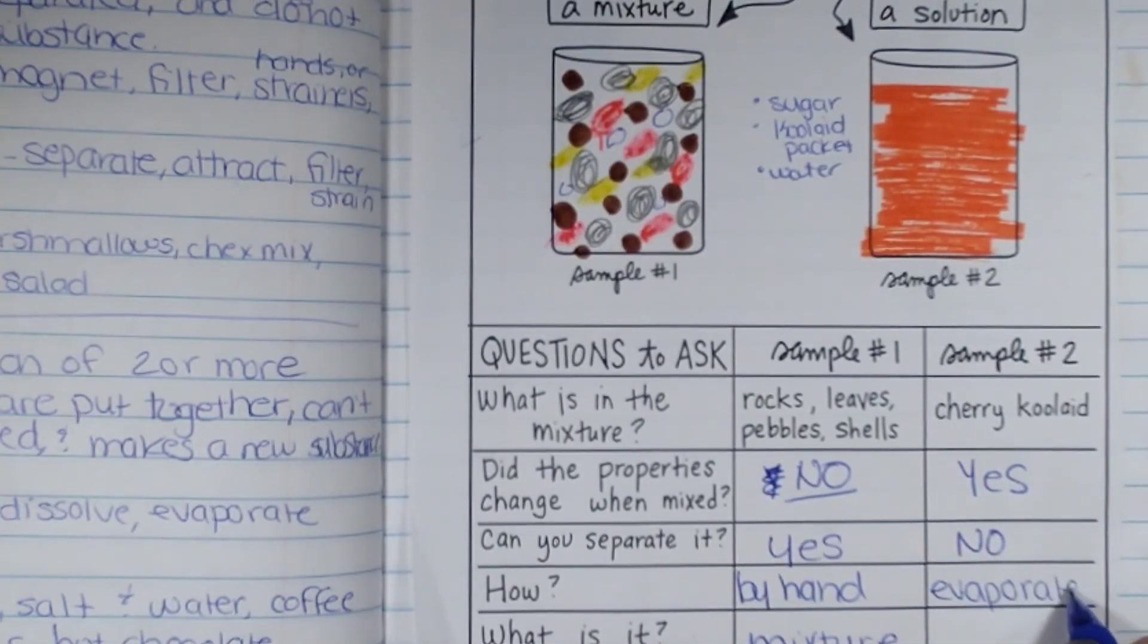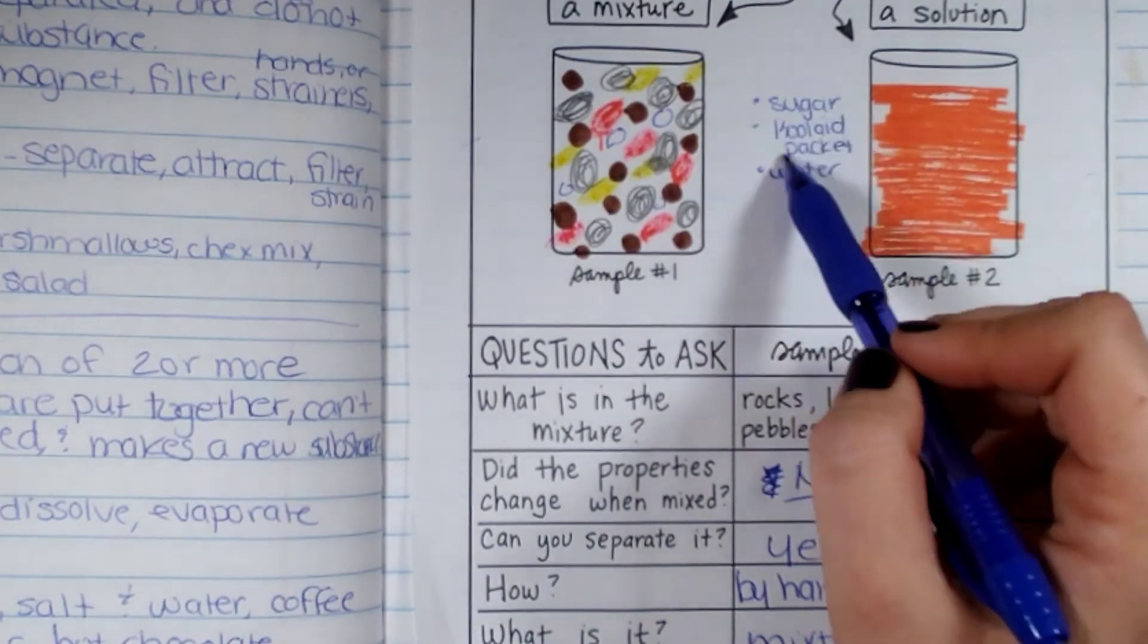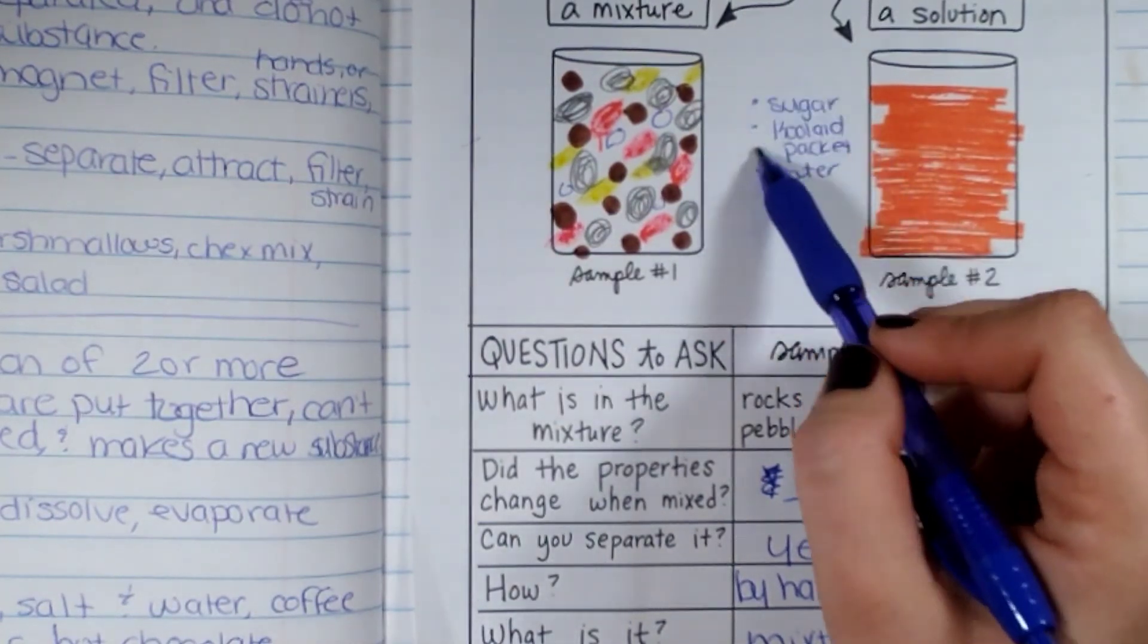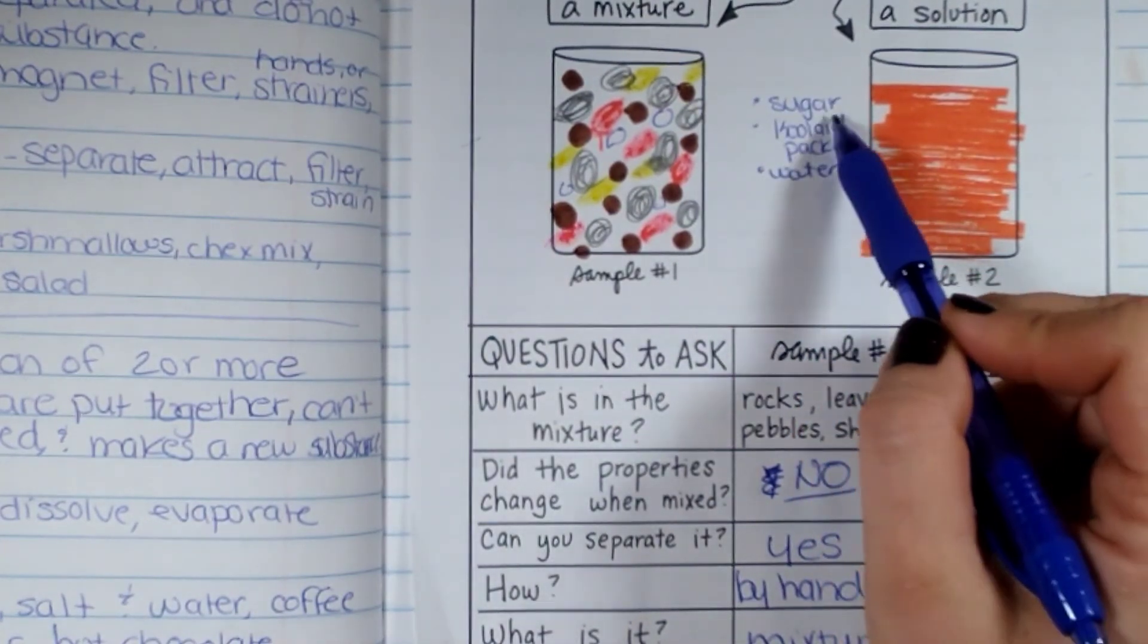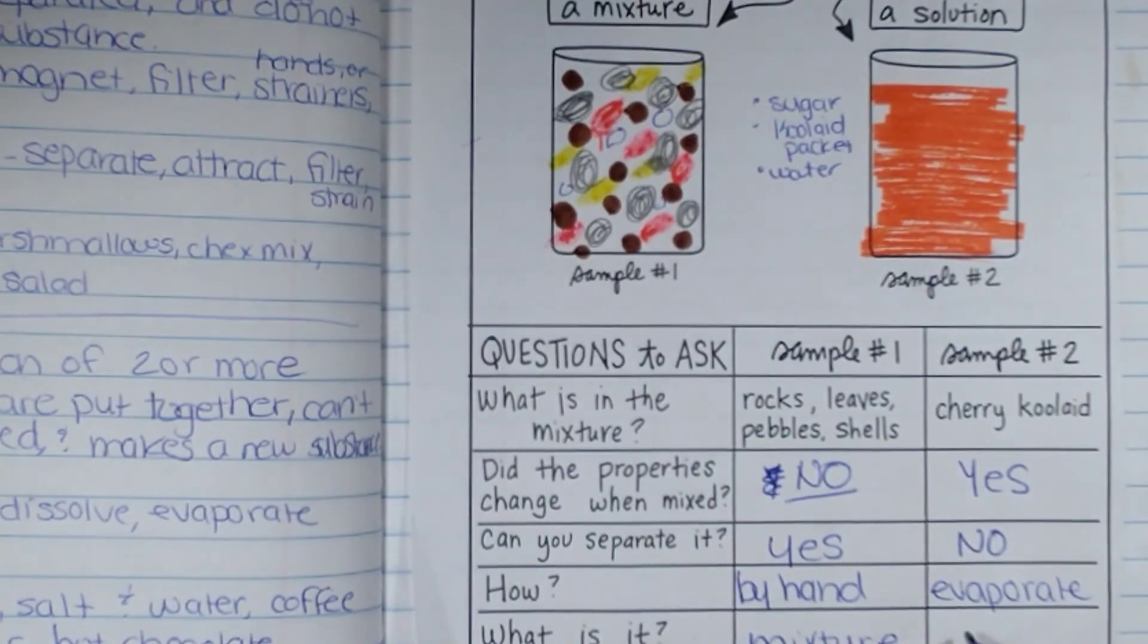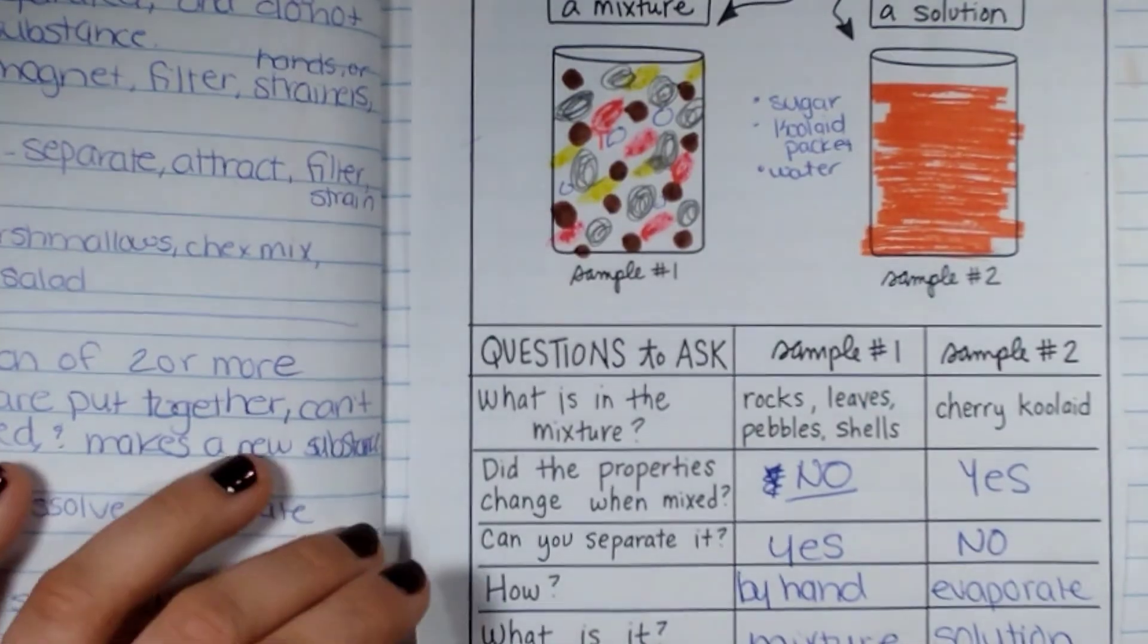You could separate the water from the sugar. If all of this was together, mixed together in one container, I could separate the water from this by evaporation. So that would be a solution. If I can't separate it all, it's still a solution.